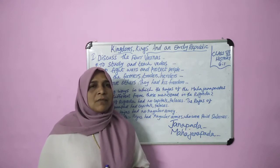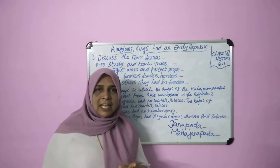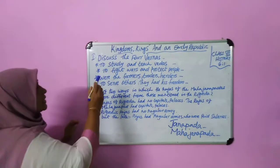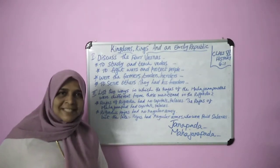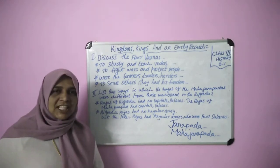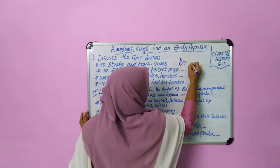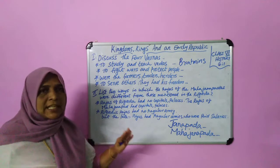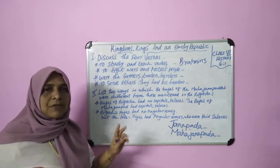The priest divided the society into four groups named varnas or castes. The four varnas were: brahmins, kshatriyas, vaishyas and shudras. The first varna, brahmins, were responsible to study and teach the Vedas and to receive gifts.